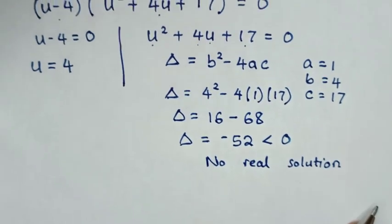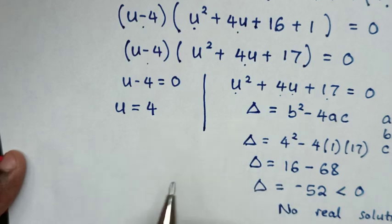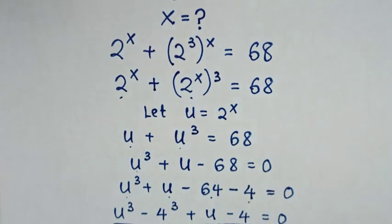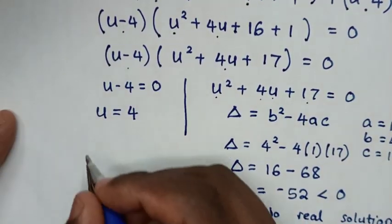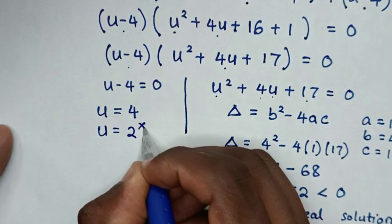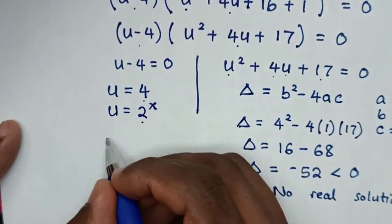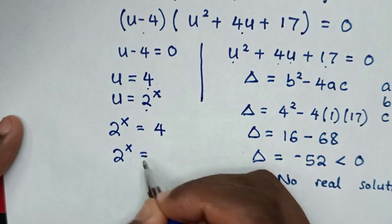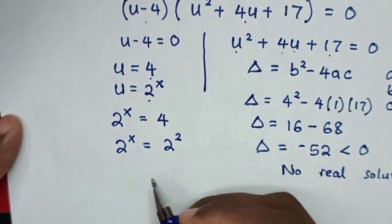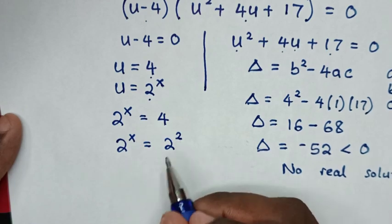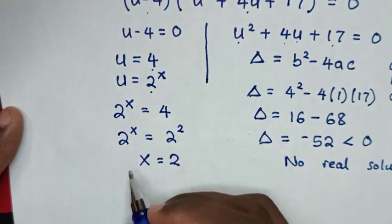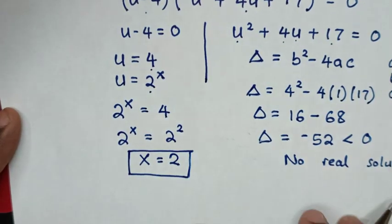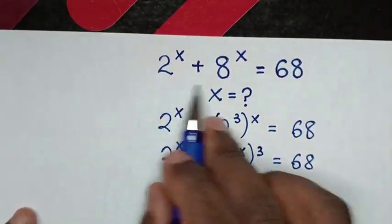So we will continue to solve from the first part, which is u is equal to 4. But before, we let u equal to 2 power x, so we rewrite that: 2 power x is equal to 4. Then in the next step, 2 power x is equal to 4, which is the same as 2 power of 2. Because we have the same base, we compare the powers, so x is equal to 2. This is the final answer for the value of x in this problem.